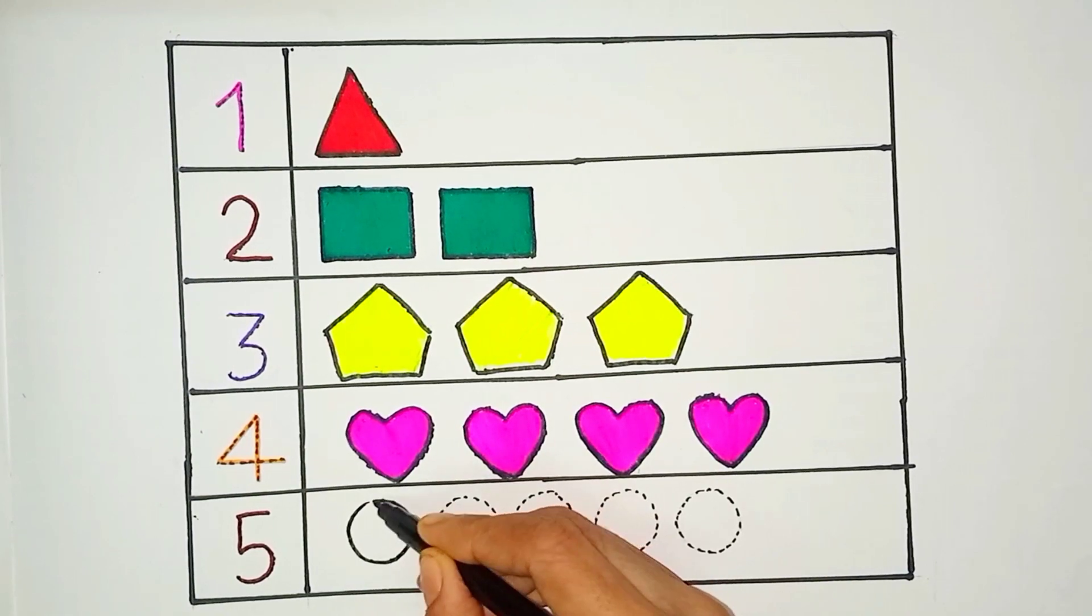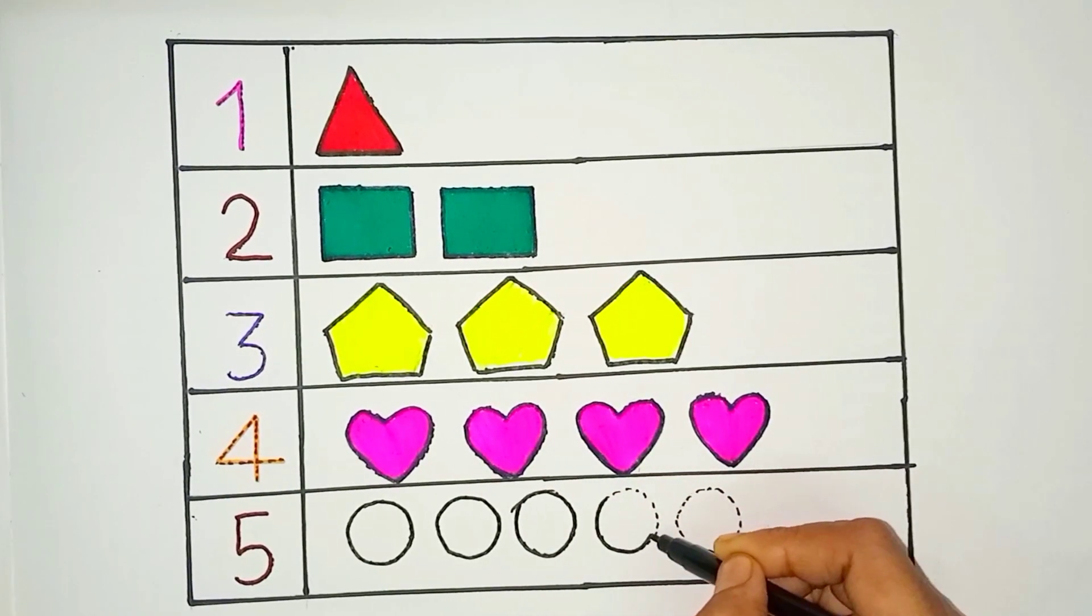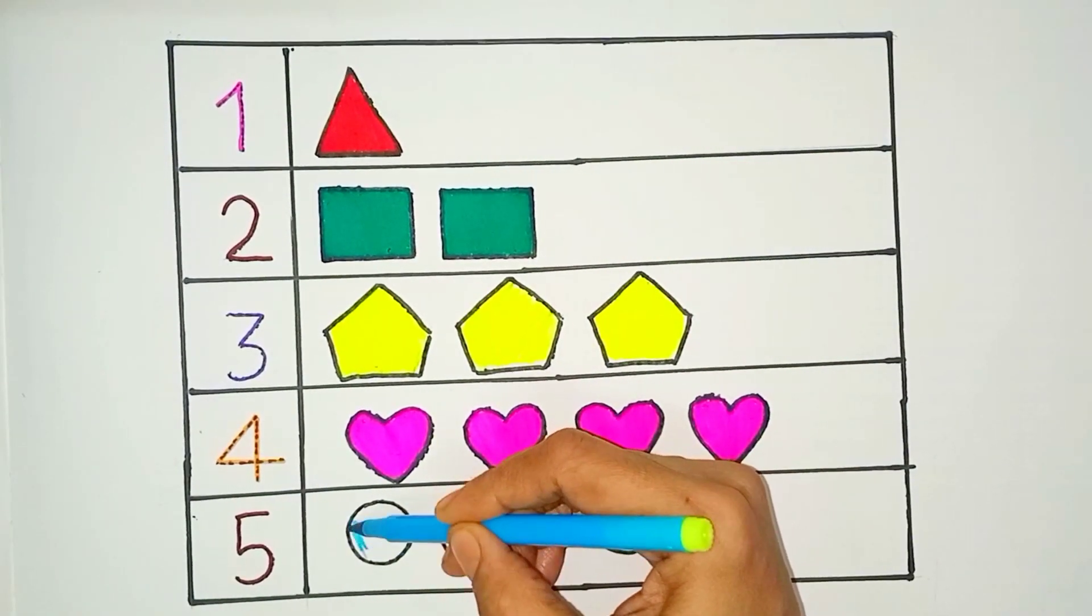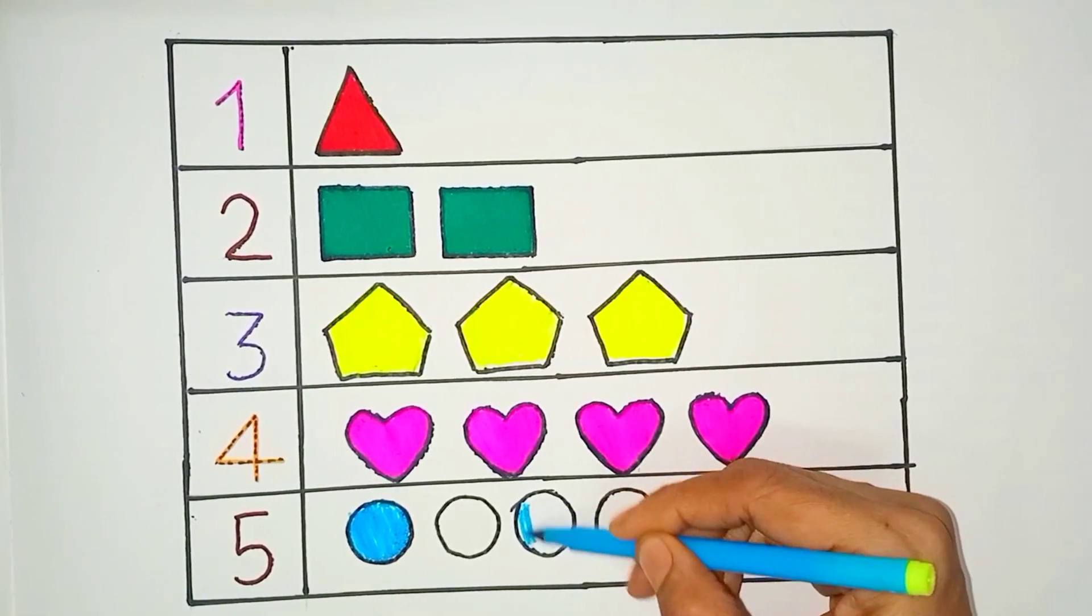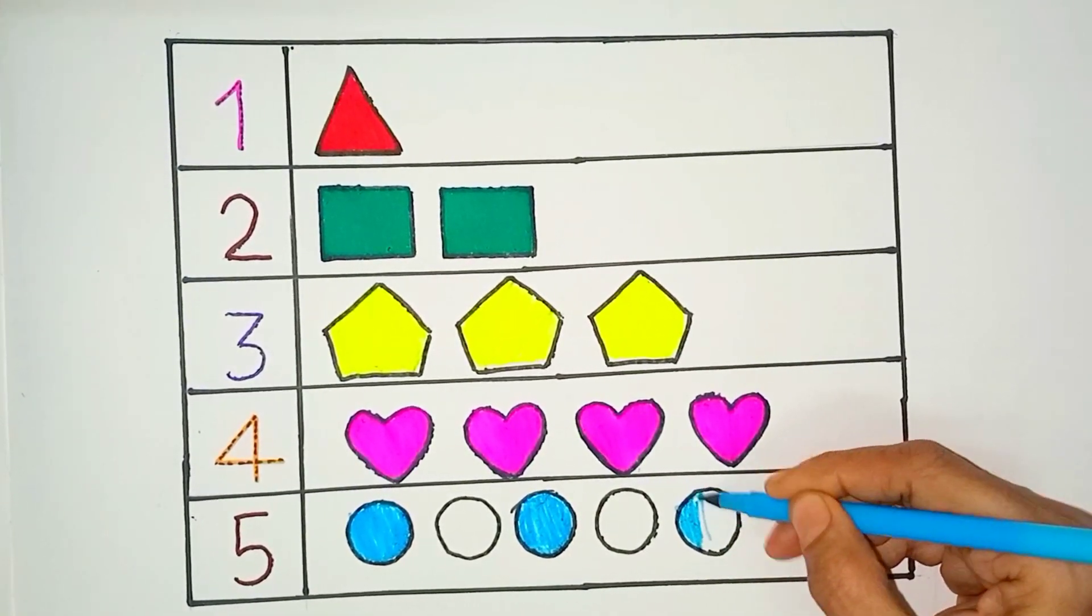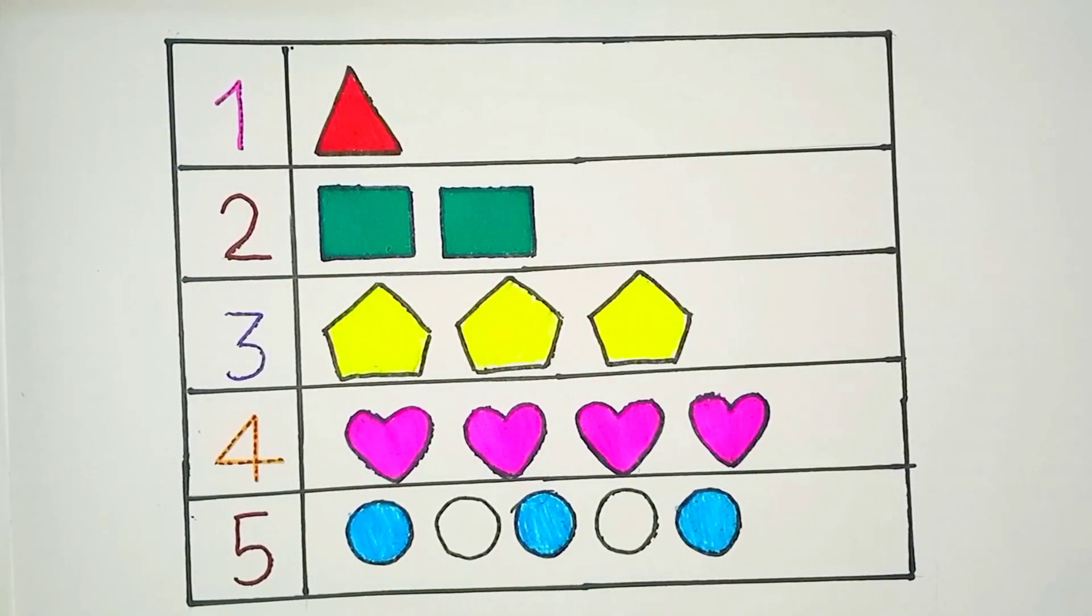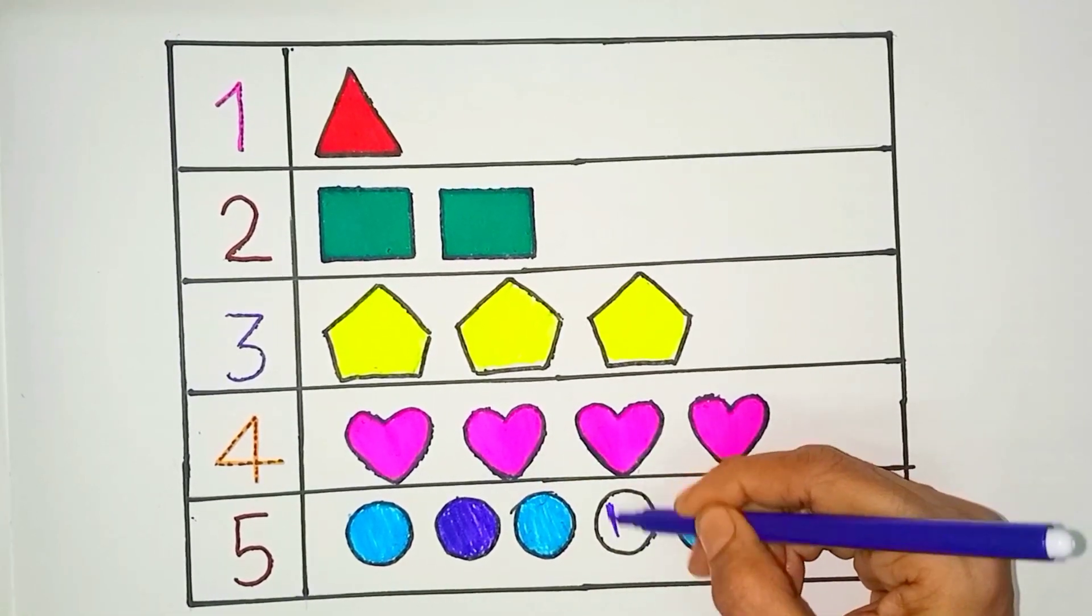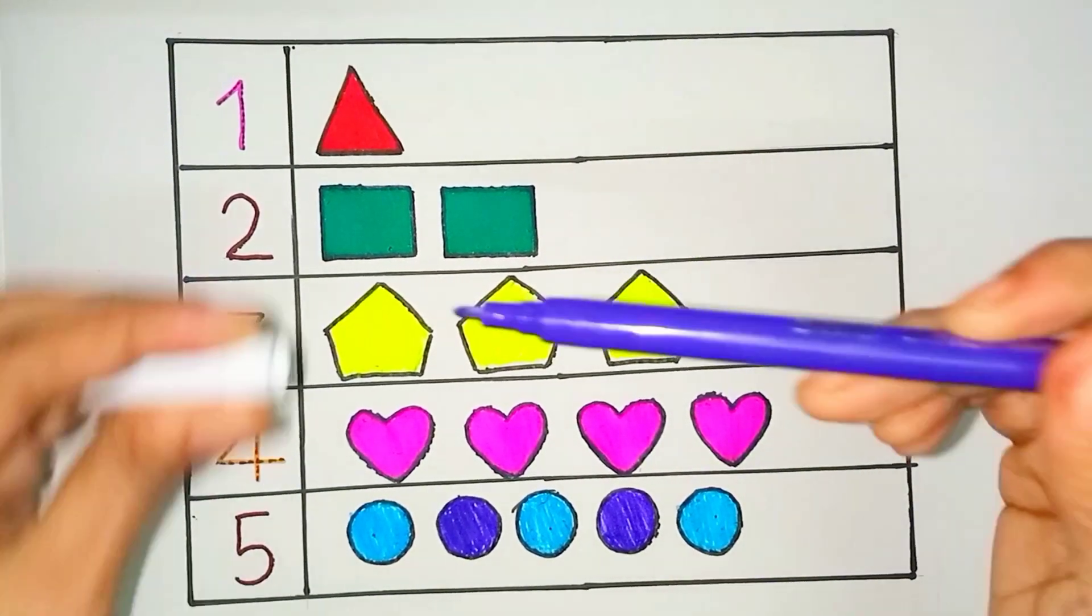Five, circle, light blue color, dark blue color. One, two, three, four, five circles.